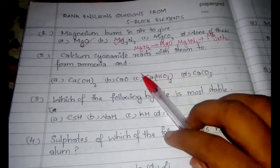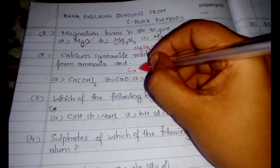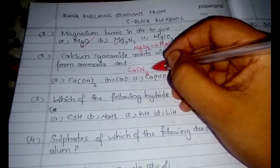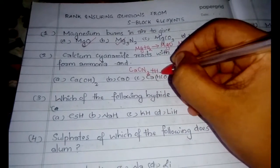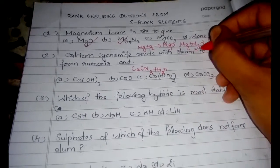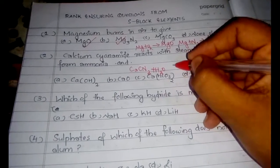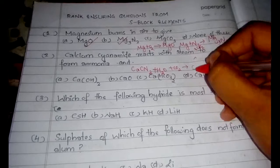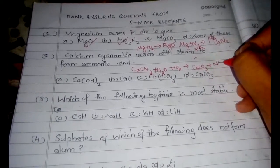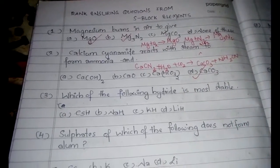The second question is about calcium cyanamide reacting with steam. The formula of calcium cyanamide is CaCN₂. It reacts with steam (H₂O) along with CO₂, forming calcium carbonate (CaCO₃) and NH₂CN.